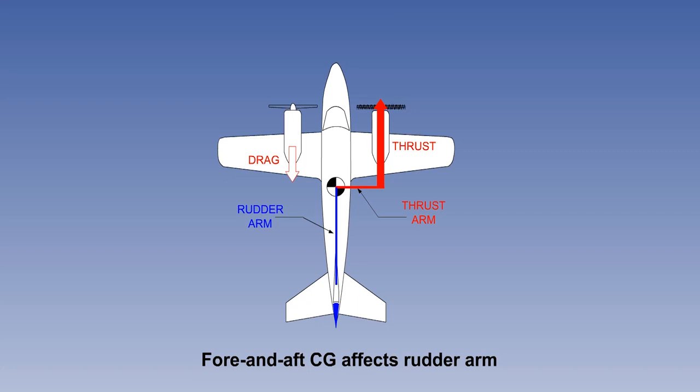The rudder arm is affected, however, with an aft CG giving the worst case with the least rudder effectiveness.